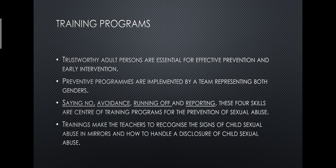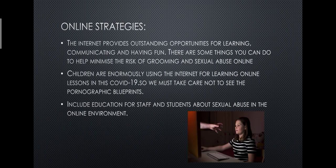Trustworthy adult persons are essential for effective prevention and early intervention. Preventive programs are implemented by a team representing both genders. Saying no, avoidance, running off, and reporting — these four skills are the center of training programs for the prevention of sexual abuse. Trainings make teachers able to recognize the signs of child sexual abuse in minors and how to handle a disclosure of child sexual abuse.